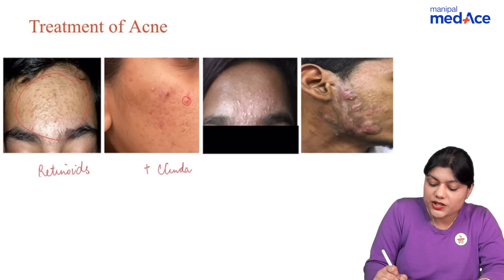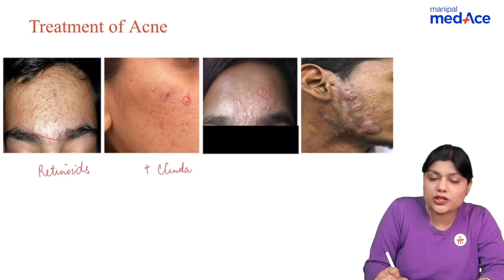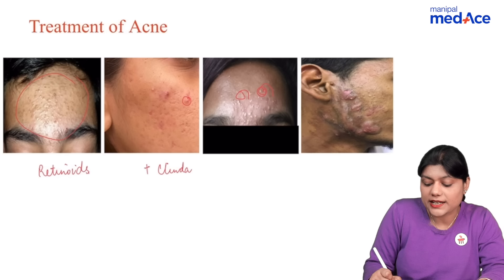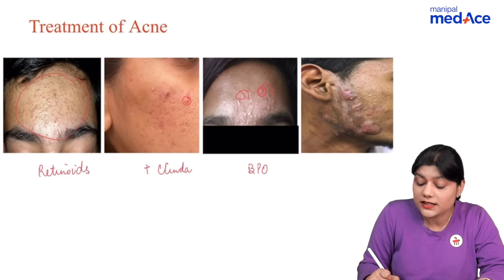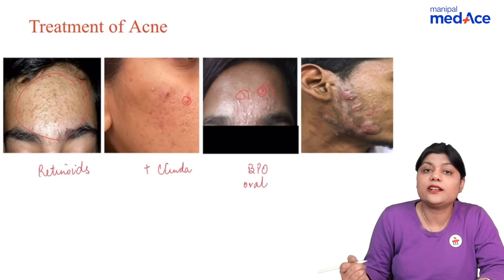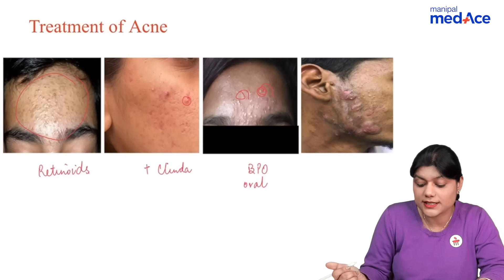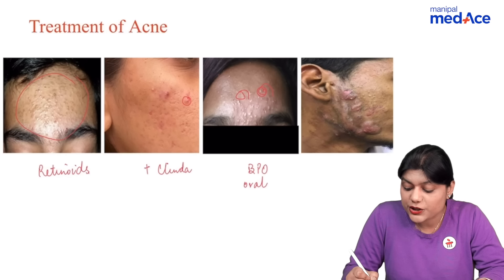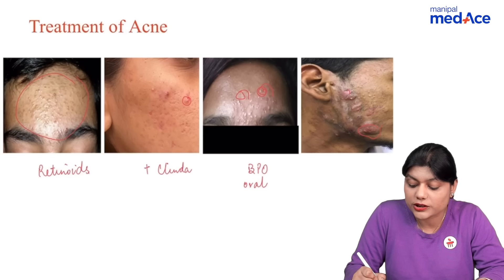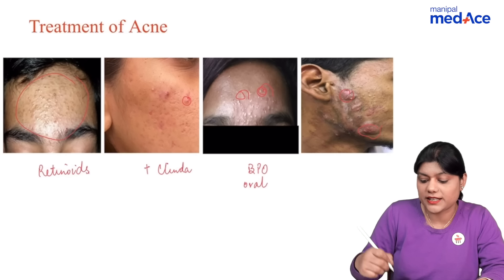This is a patient having pustular acne. Here we can add benzoyl peroxide and an oral antibiotic like doxycycline or azithromycin. And this is a patient having cystic acne — nodulocystic acne.